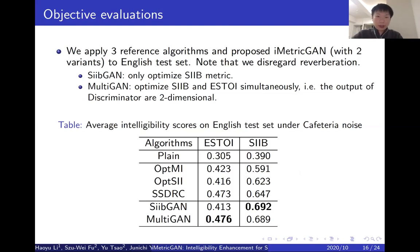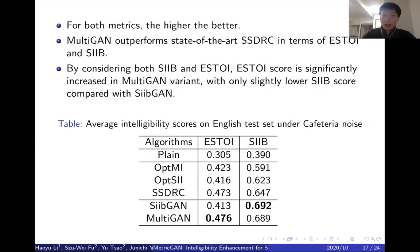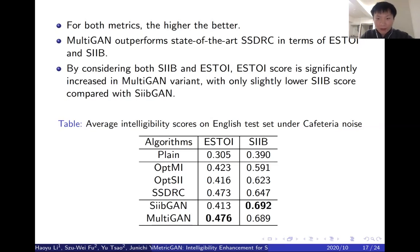There are two variants of our proposed method. The first is denoted as SIBGUN, in which we only optimize the SRIB metric. The second is denoted as MARTIGUN, in which we optimize SRIB and SSTOi scores simultaneously — meaning the outputs of the D model are two-dimensional: one for SRIB score and one for SSTOi score. The results are given in this table. We can see that the MARTIGUN outperforms the state-of-the-art SSDRC method in terms of both SSTOi and SRIB scores. By considering both SRIB and SSTOi scores, SSTOi can be significantly improved in the multi-metric GAN variant with only slightly lower SRIB scores compared with SIBGUN.